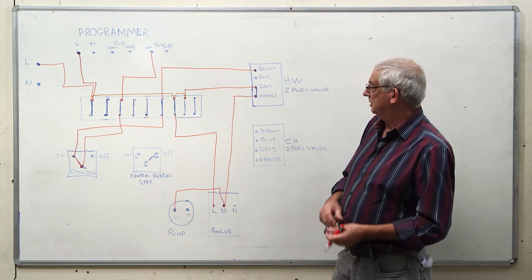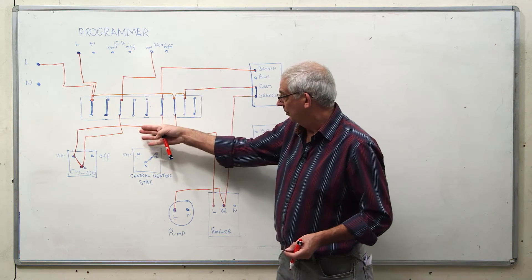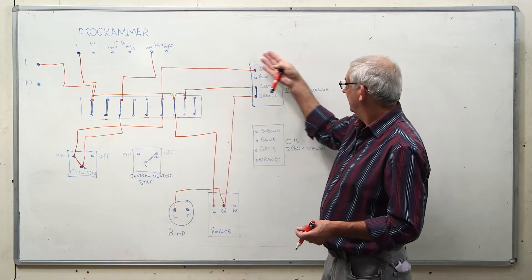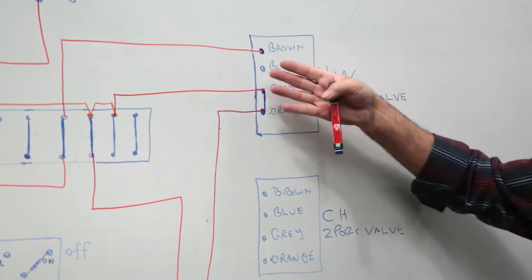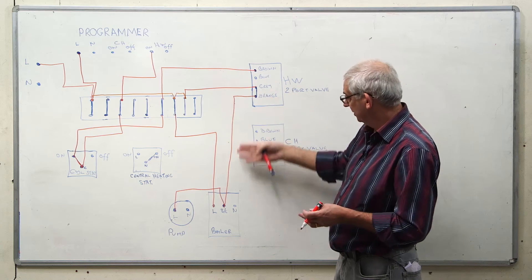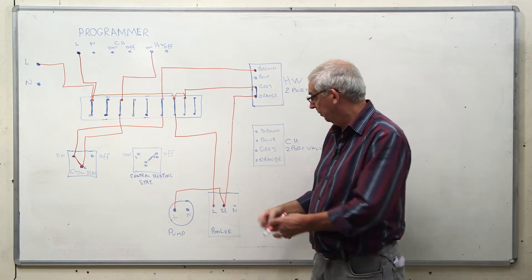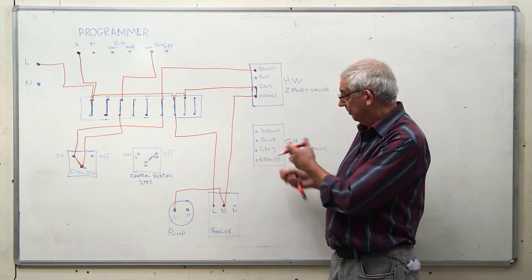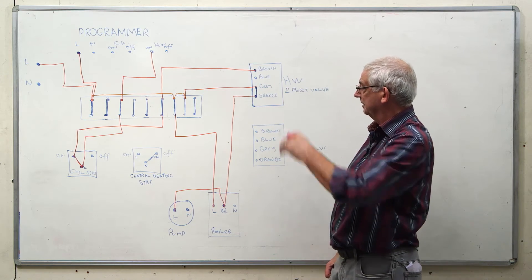So now what we've got is a situation where calling for hot water, cylinder stat is made, the micro switch is closed because the valve is now opened, micro switch closed, sends a live down to the boiler, the boiler starts up, starts the pump running and we've now got hot water flowing through the system.